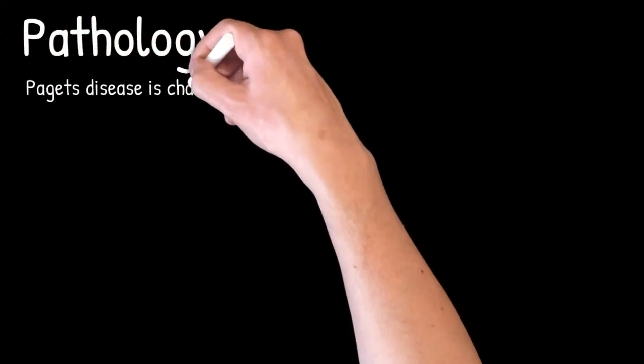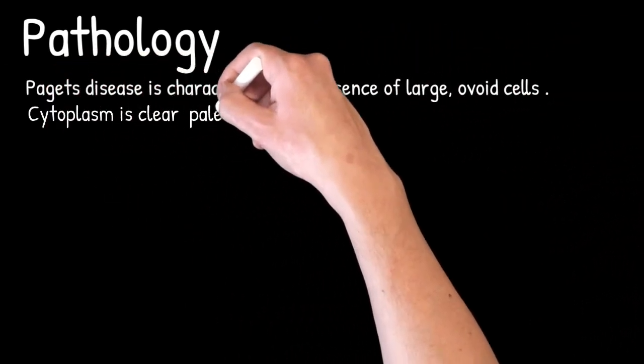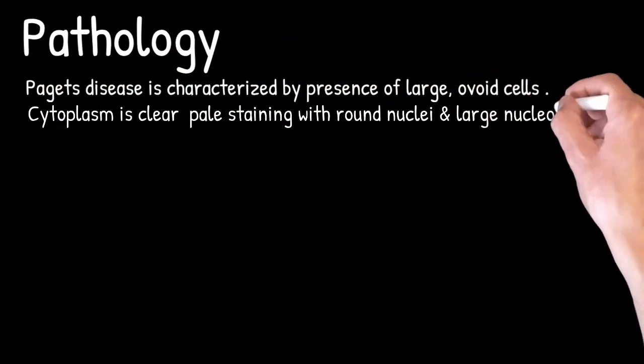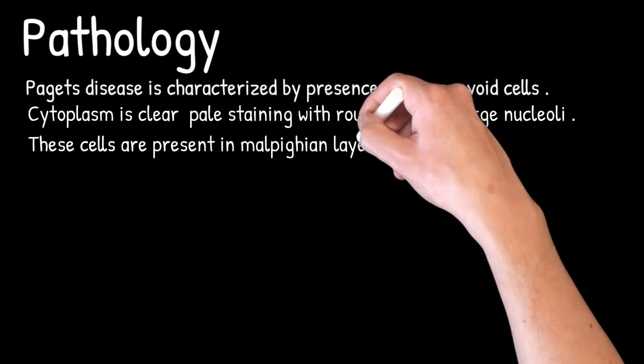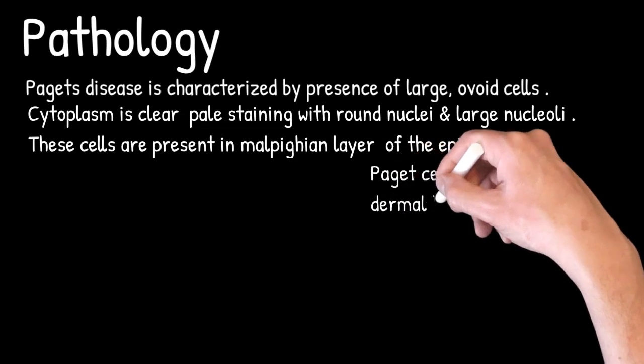Now, pathology. Paget's disease is characterized by the presence of large covoid cells, clear cytoplasm staining with round nuclei and large nucleoli. These cells are present in the malpighian layer of epidermis.